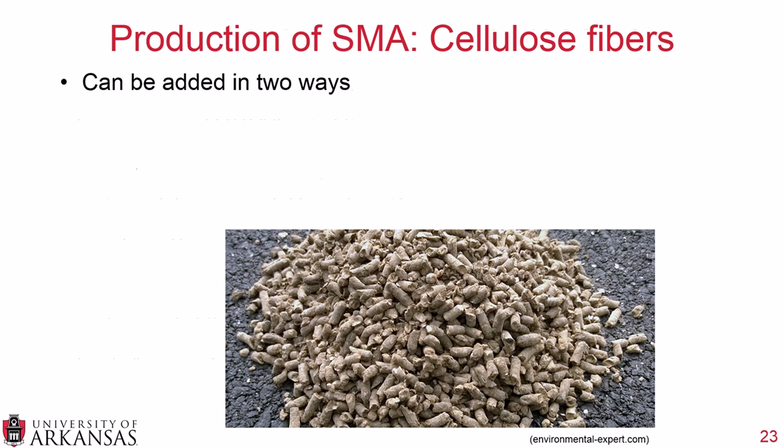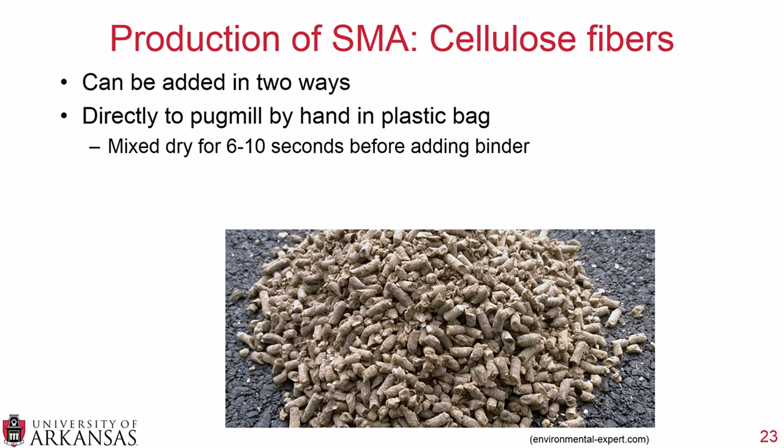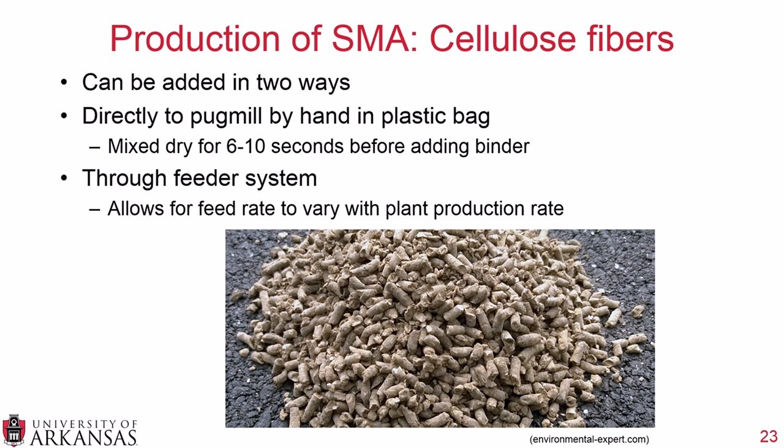For cellulose fibers, they can be added in two ways: directly to the pug mill by hand in a plastic bag, mixing dry for 6 to 10 seconds before adding the binder; or through an automated feeder system, which allows the feed rate to vary with plant production speed for more precise control.